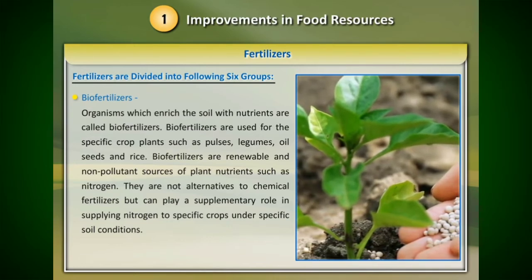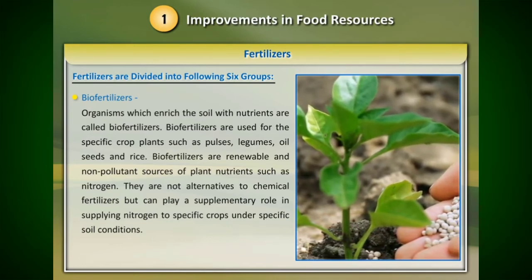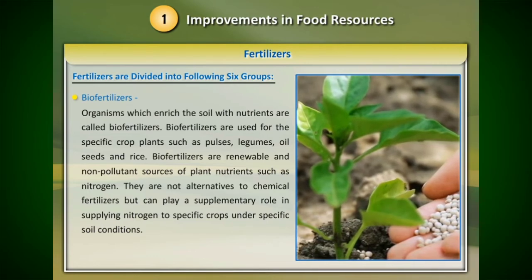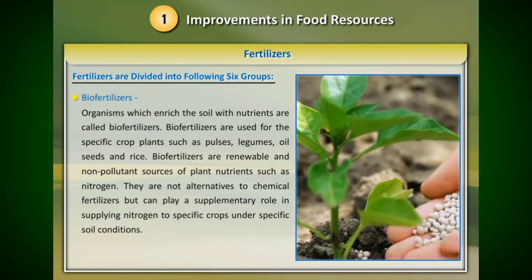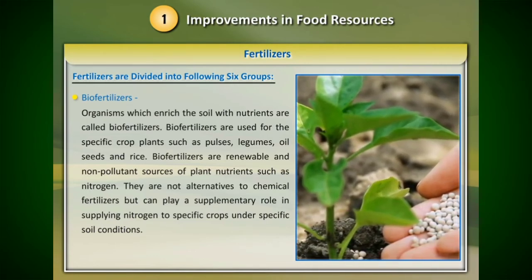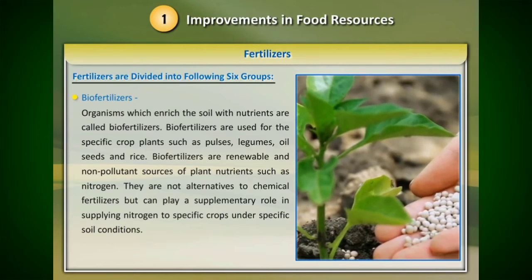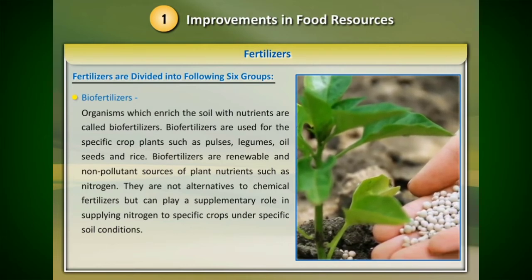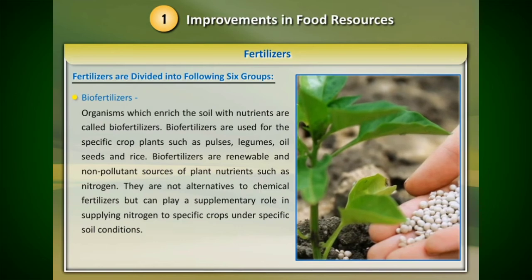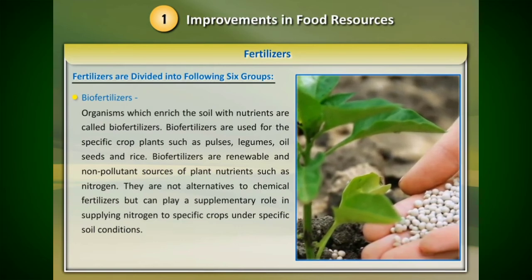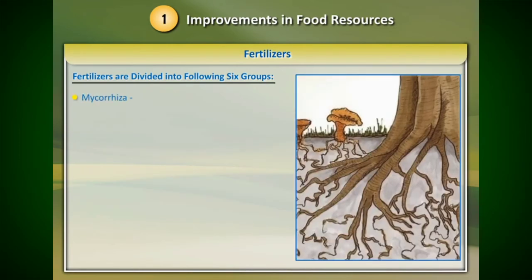Bio fertilizers are used for specific crop plants such as pulses, legumes, oil seeds, and rice. They are renewable and non-pollutant sources of plant nutrients such as nitrogen. They are not alternatives to chemical fertilizers but can play a supplementary role in supplying nitrogen to specific crops under specific soil conditions.